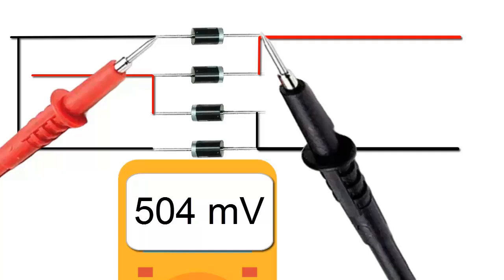Note the reading shown on the screen. The measurement should be around 0.5 to 0.7 volts, indicating that the diode is forward biased, which apparently means that the diode is functioning correctly. Note the measurement obtained on the multimeter.